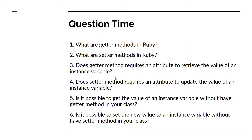Now for the question section. These questions will help you understand getter and setter methods better. What are getter methods in Ruby? What are setter methods in Ruby? Does a getter method require an argument to retrieve the value of an instance variable? No, it does not — because we are just getting a value that is already stored. Does a setter method require an argument to update the value? Yes, it does — because we are replacing the old value with a new one.